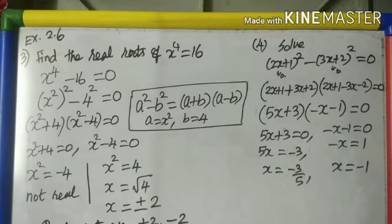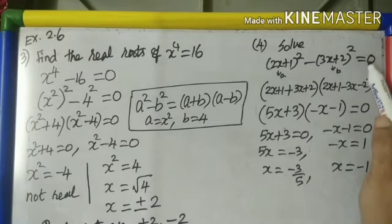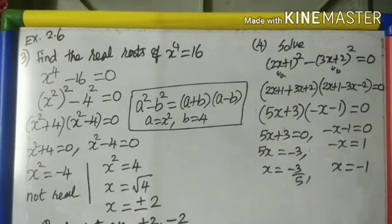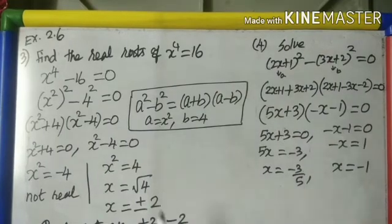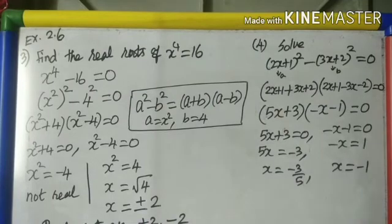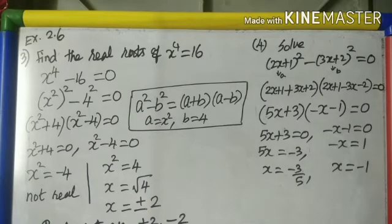Exercise 2.6 is a simple exercise finding zeros or roots. Whenever the polynomial is equated to 0 or to some number, the solutions are called roots. Whenever an expression is given without being equated to a value, the solutions are called zeros. Try and write the problems on your own. Thank you.